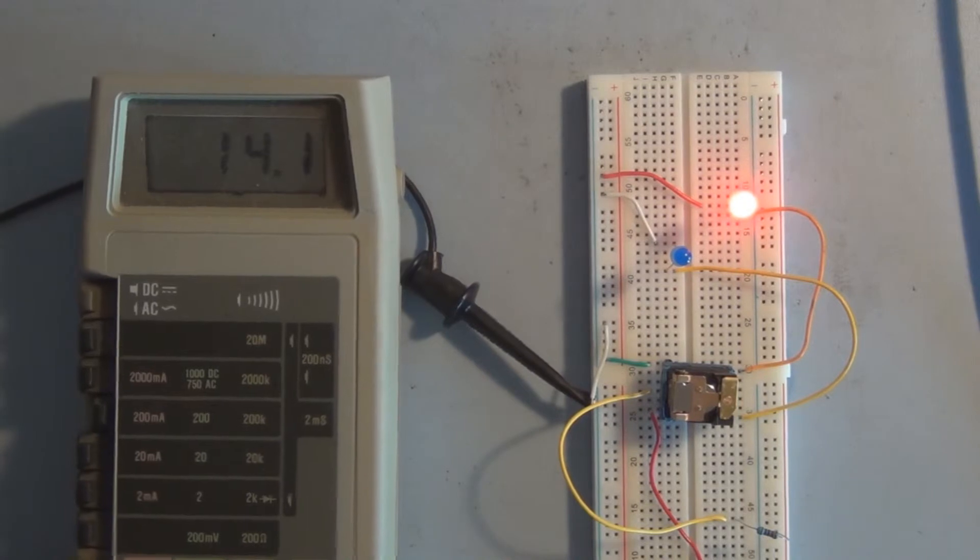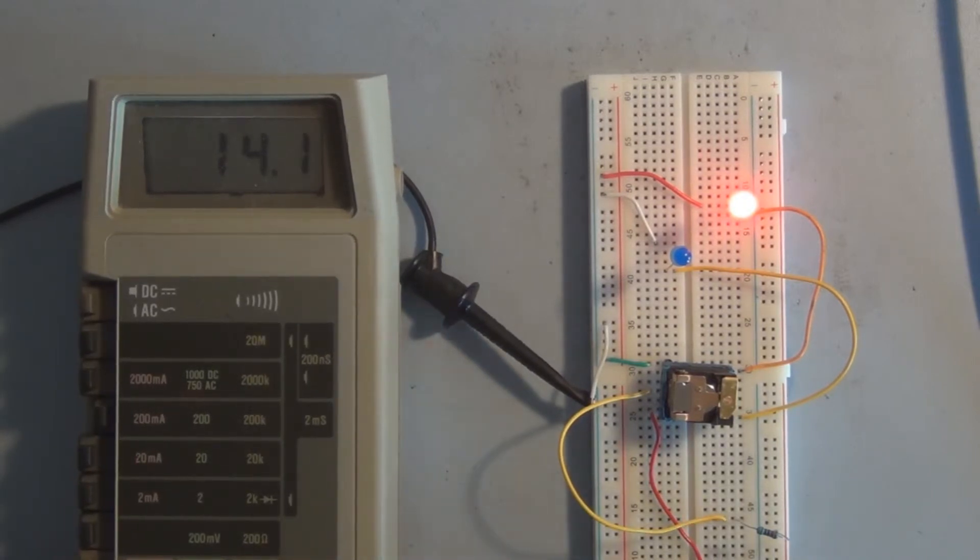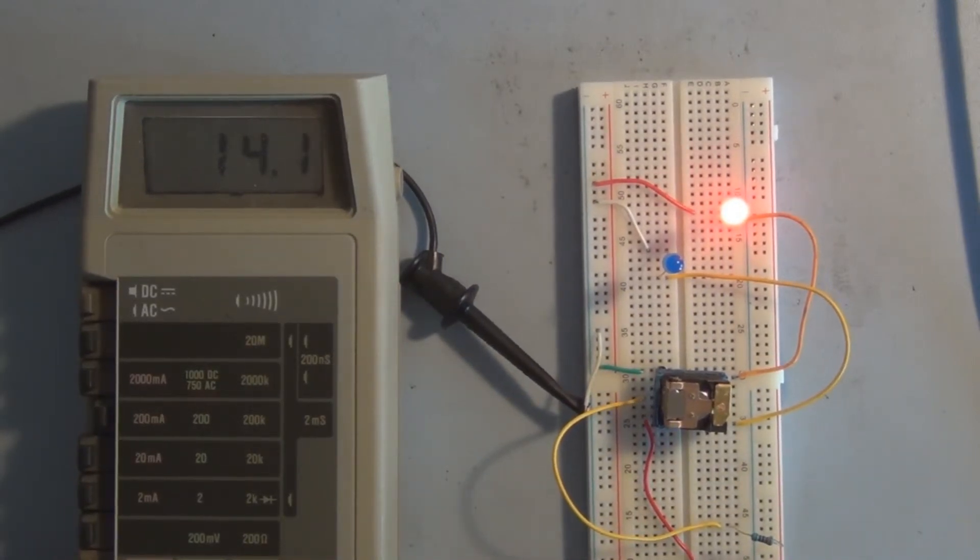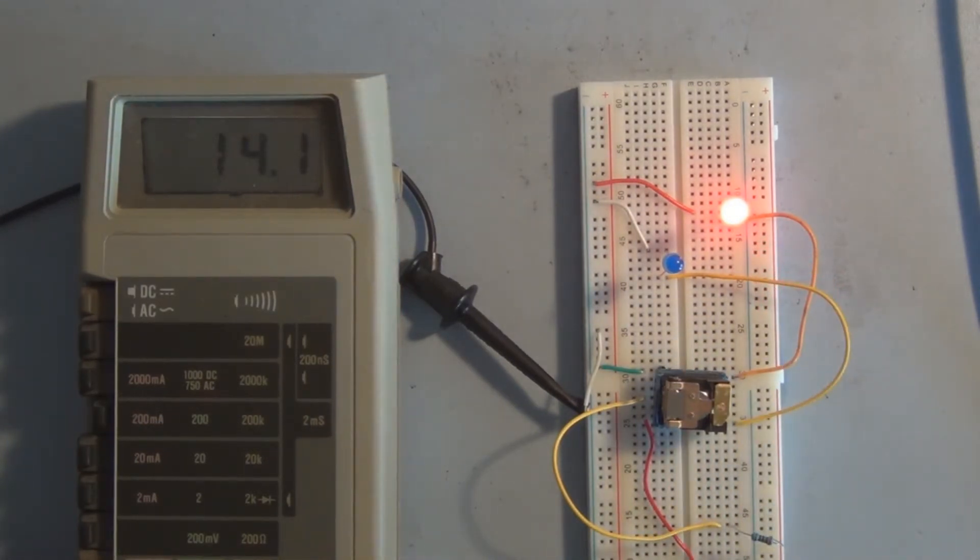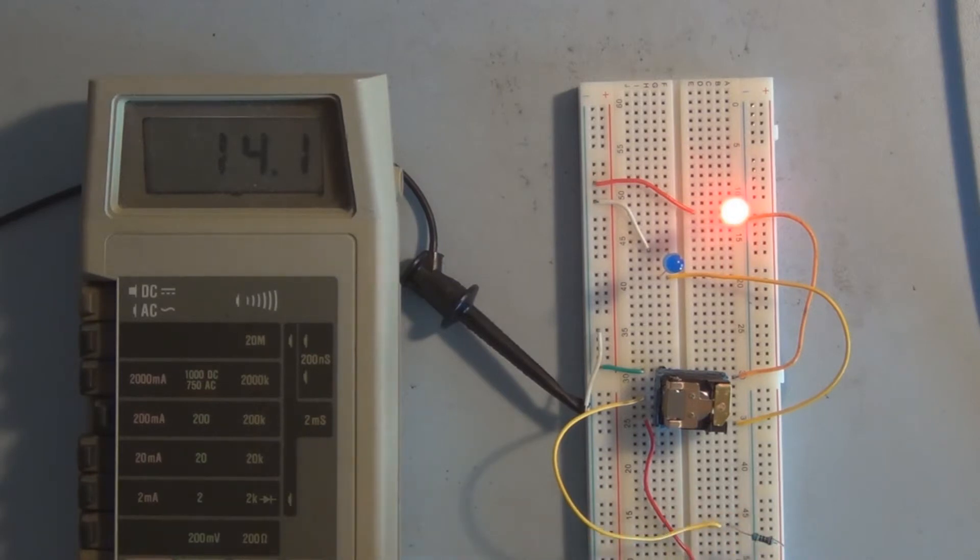So here, measuring the current, and in the normally closed position, the red LED is drawing about 14 milliamps at 5 volts. And of course, when you activate the relay, it takes a lot more energy and a lot more current to turn that bar of metal into a magnet, and so we're drawing about 78.5 milliamps to activate and close the normally open side of the relay.